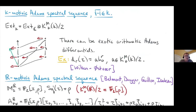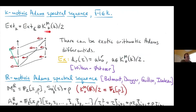What about the K-motivic Adams spectral sequence in the situation where minus one is a square — so rho equals zero — giving a relatively simple formula for Ext? We know C-motivic Ext in a large range and can get K-motivic Ext as long as we know the Milnor K-theory of K. The arithmetic of K enters only through the Milnor K-theory.